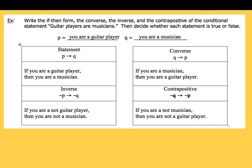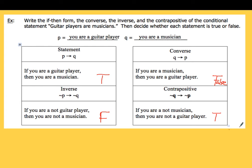Now we decide whether each statement is true or false. 'If you are a guitar player, then you are a musician' — true. The inverse, 'if you are not a guitar player then you are not a musician' — false, because there are musicians who don't play guitar. The converse, 'if you are a musician then you are a guitar player' — also false. The contrapositive, 'if you are not a musician then you are not a guitar player' — true.